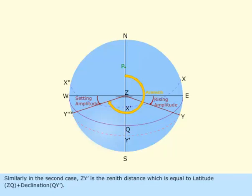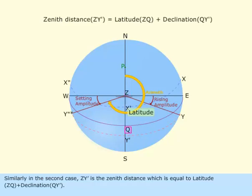Similarly, in the second case, ZY' is the zenith distance, which is equal to latitude ZQ plus declination QY'.